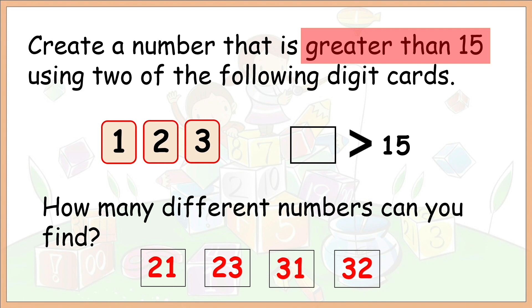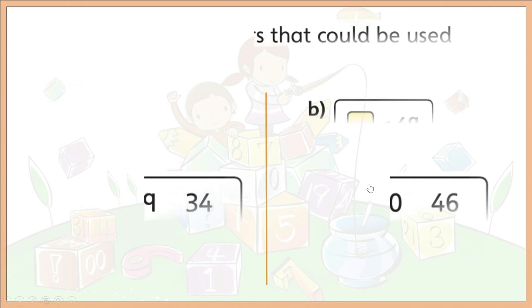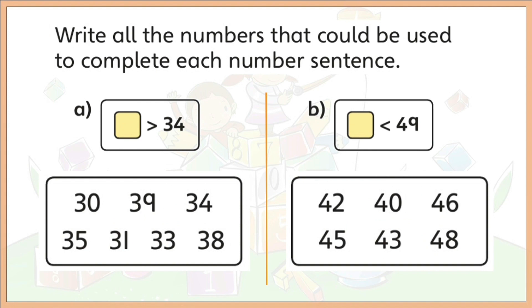Now, I'll give you the same activity as this as your practice. Write all the numbers that could be used to complete each number sentence. List down all the possible answers for letter A and all the possible answers for letter B on your whiteboard or paper. Try doing this systematically. Pause again this video until you're done.